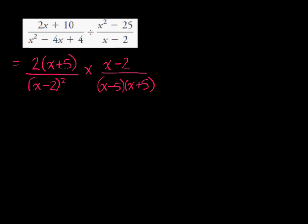Now we can either multiply numerator times numerator and denominator times denominator, or we can see what simplifies first. Here I can see x plus 5 — I'm going to have x plus 5 divided by x plus 5 at some point, and so that is equal to 1. I've also got x minus 2 divided by x minus 2, so it's going to take away one of the factors of x minus 2 in the denominator.